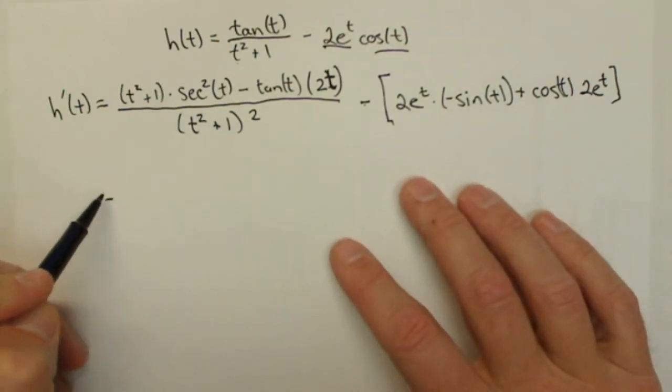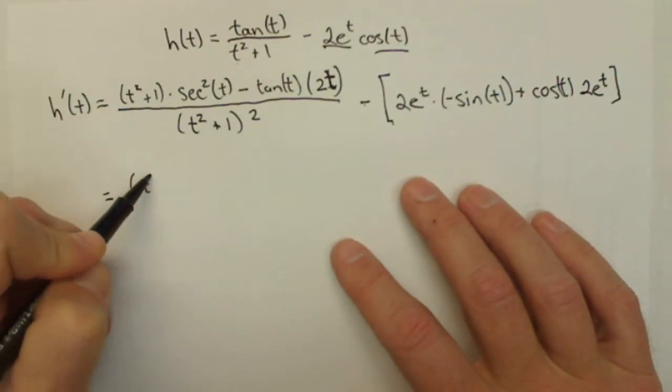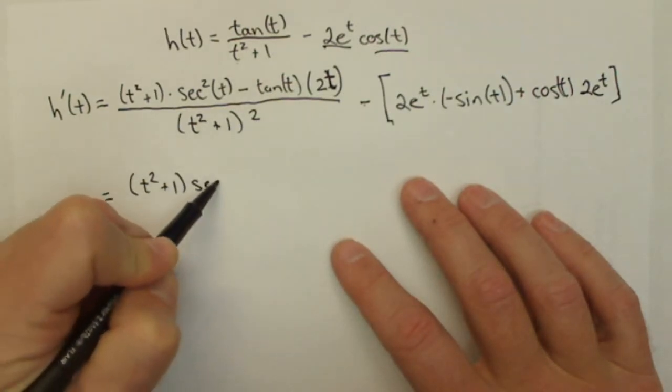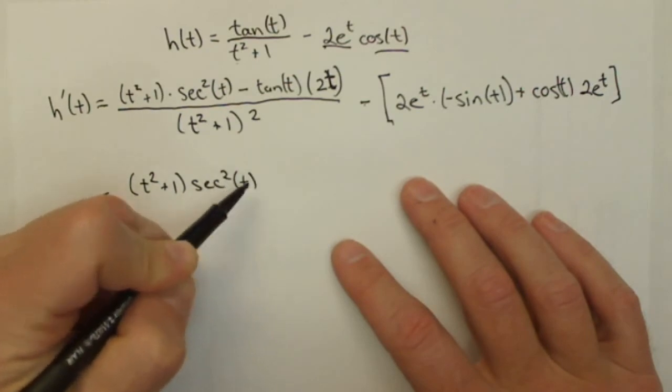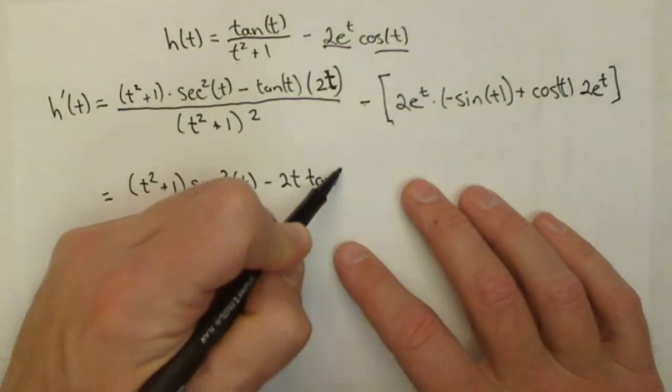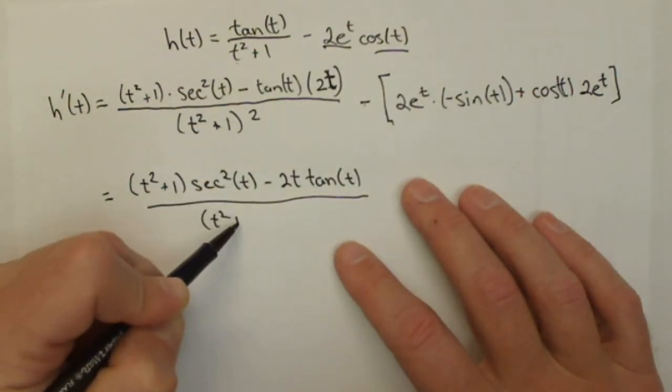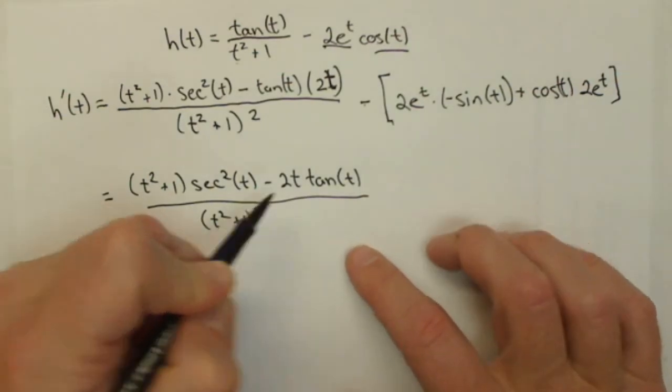There's not a lot of simplifying we can do on this one. t squared plus 1 times secant squared t minus 2t tangent of t all over t squared plus 1, the quantity squared,